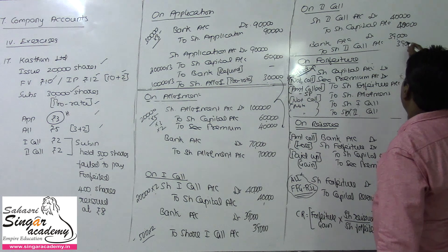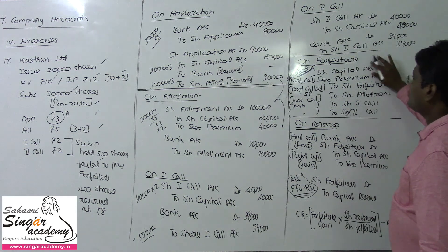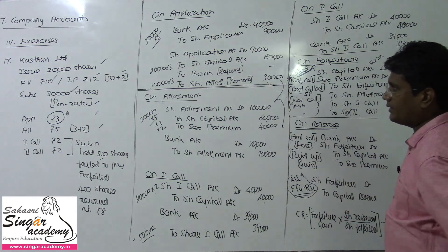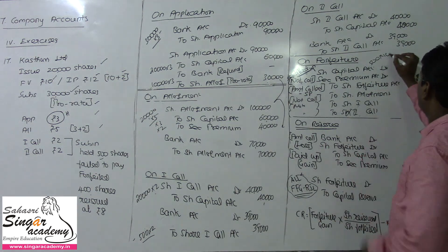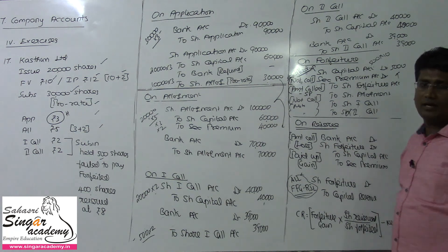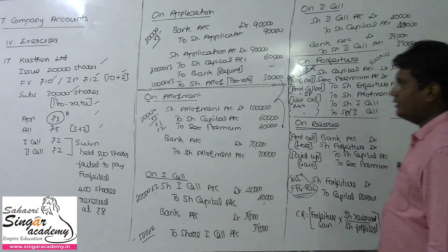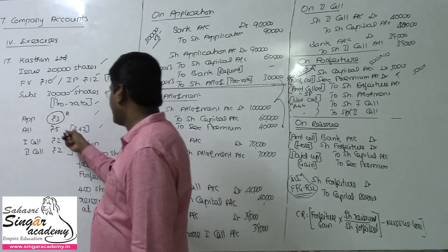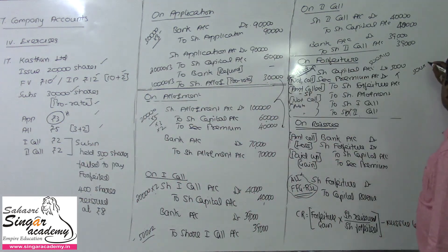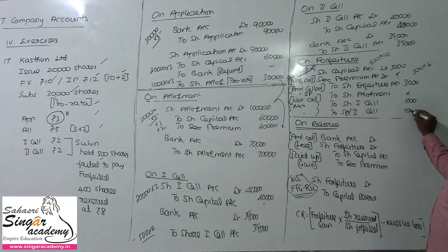On forfeiture: Share Capital is debited to the extent of called-up value — 500 shares into ₹10 equals ₹5,000. Securities premium is not debited as it was already collected. Share Forfeiture is credited with the amount actually collected: ₹1 application plus ₹3 allotment plus ₹2 first call = ₹6 per share (excluding securities premium), so 500 into ₹6 equals ₹3,000. Calls in arrears: first call ₹1,000, second call ₹1,000 are credited.